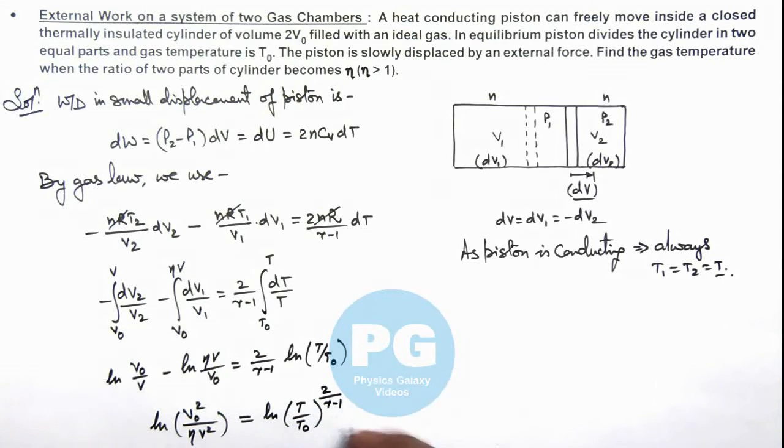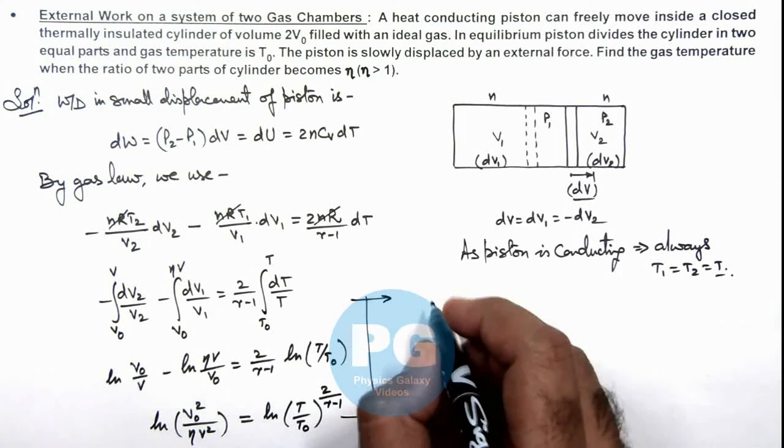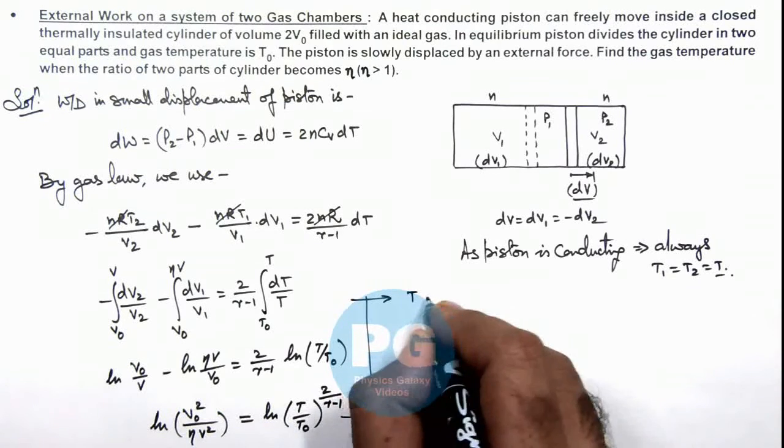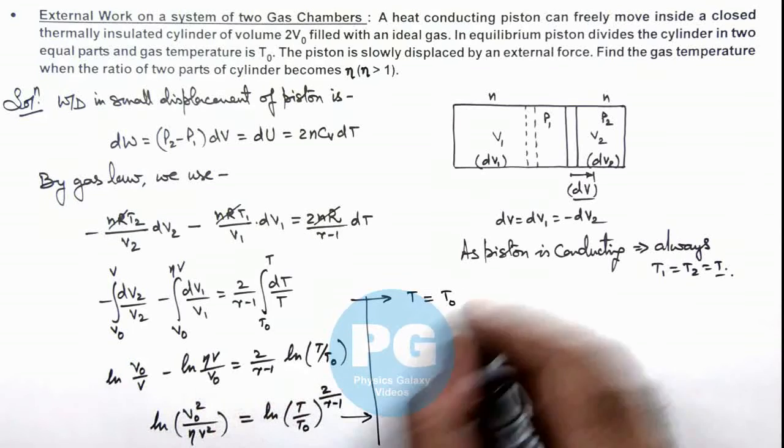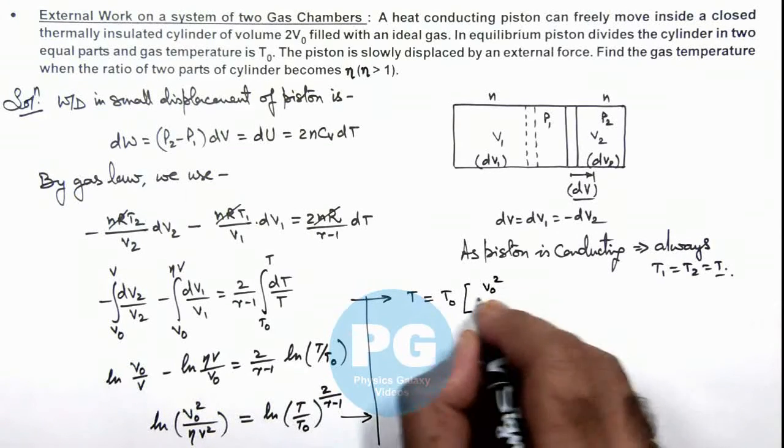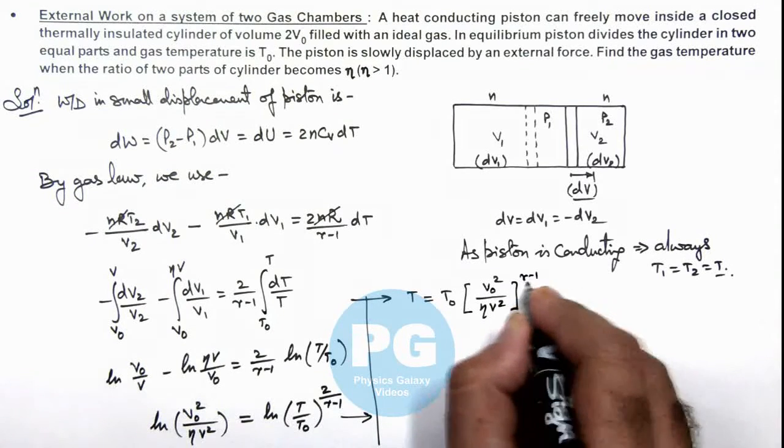And from here, we can take antilog on the two sides. Then we can continue here. Here you can see this gives the value of T is equal to T₀ multiplied by this is V₀²/(ηV²) to whole power (γ-1)/2.